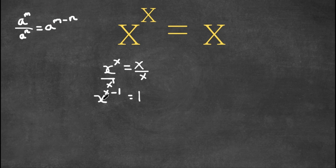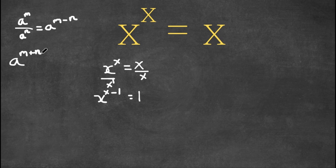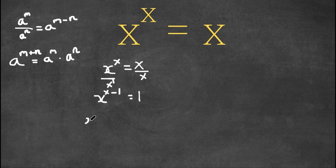Now another important property of exponents is that if we have something in the form a to the power of m plus n, this is equal to a to the power of m times a to the power of n. So x to the power of x minus 1 equals x to the power of x times x to the power of negative 1, and this is still equal to 1.